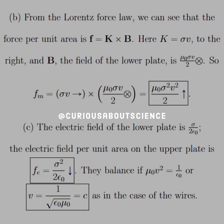So we know that they balance when we set them equal to one another. And by doing so, we get cancellation of the sigma squared and 2, leaving us with mu naught v squared equals 1 over epsilon naught, solve that for v, and we get the speed of light again.